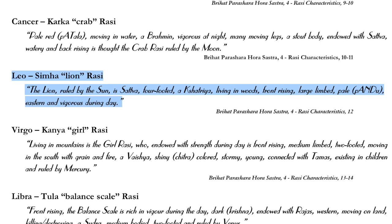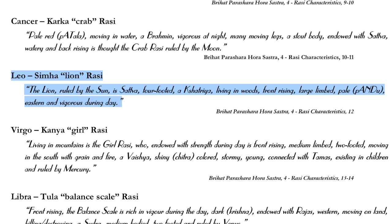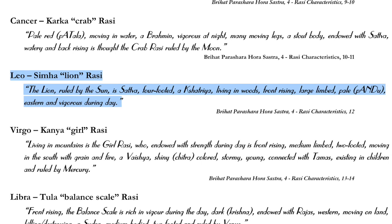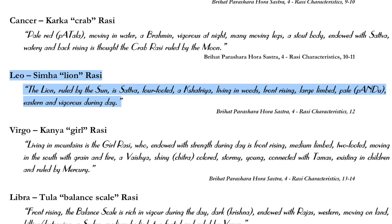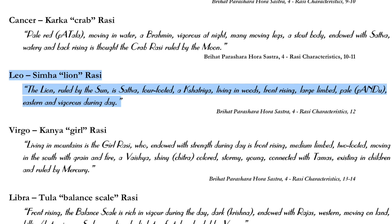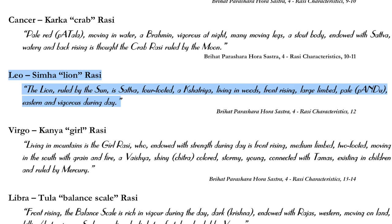Doing what you know to be right is really, in many ways, the heart of Hinduism. Krishna said to Arjuna: 'You have a right to actions only, not the results. Leave the results to God — just do what you know to be right.' He also said: 'To do your dharma poorly is better than to do another person's dharma perfectly.' So doing what you think is right is more important, even if you do it poorly.